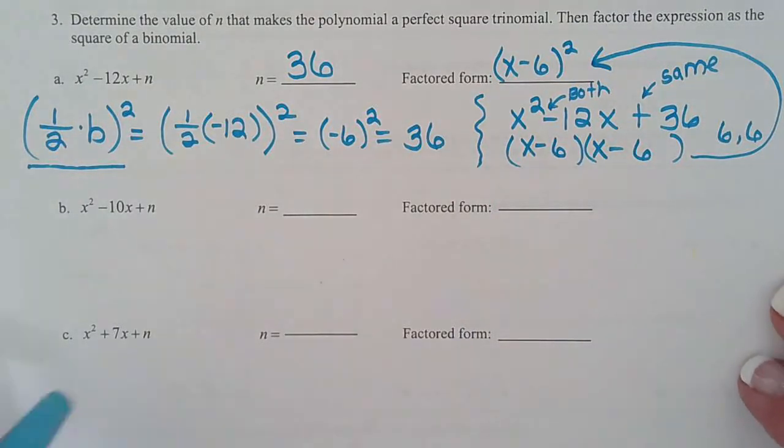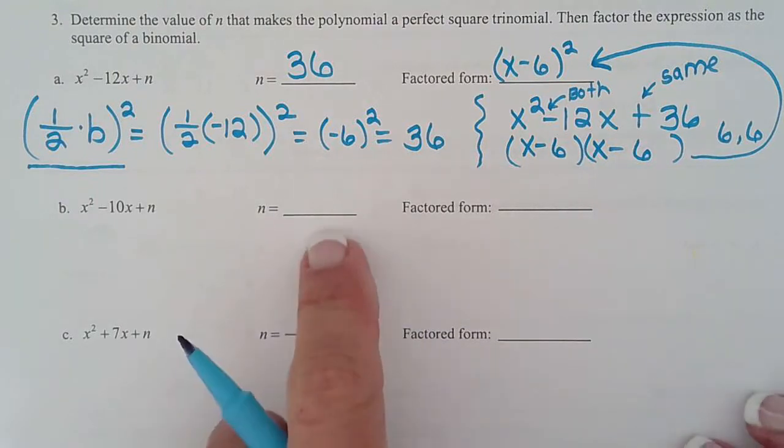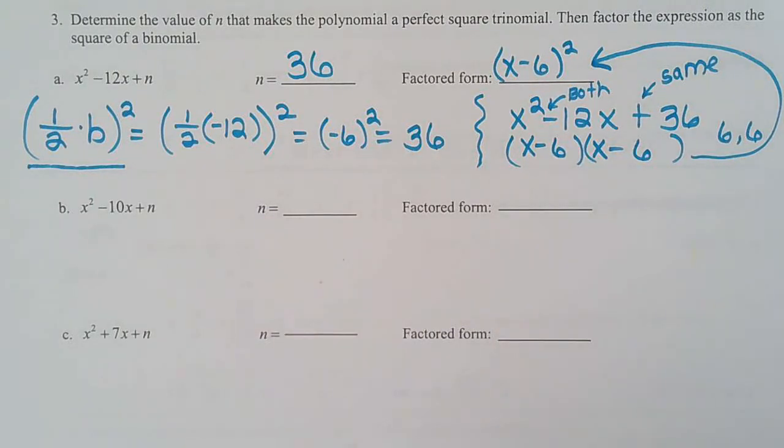So let's do one more and then I'll let you guys try a couple. Actually, why don't you go ahead and try b right now because the next two are a little bit harder. So shut off your video. Try b on your own. Find n, find the factored form, and then turn it back on and we'll check.